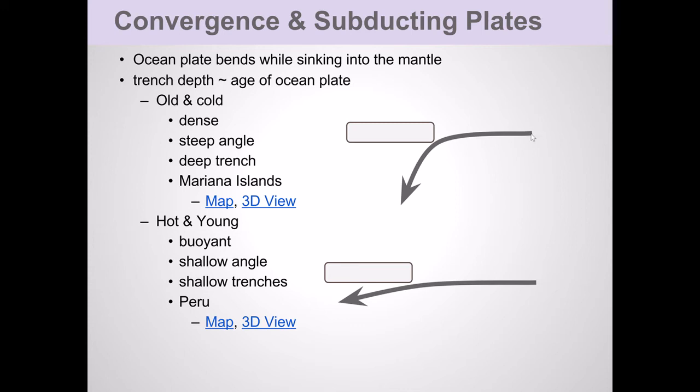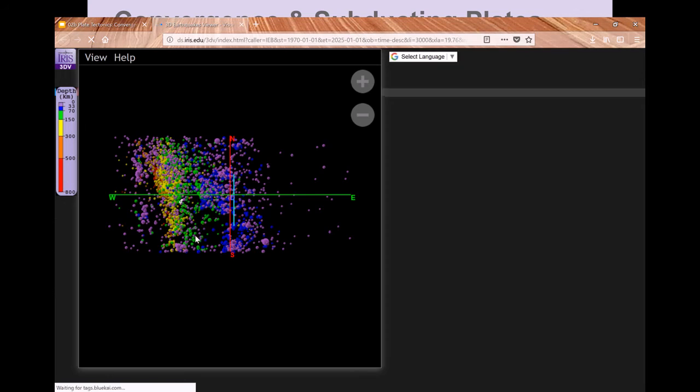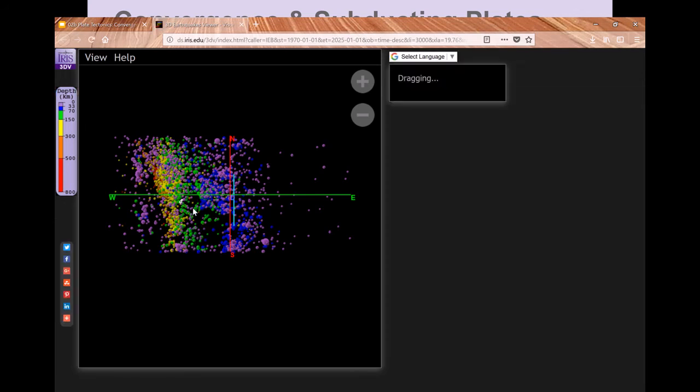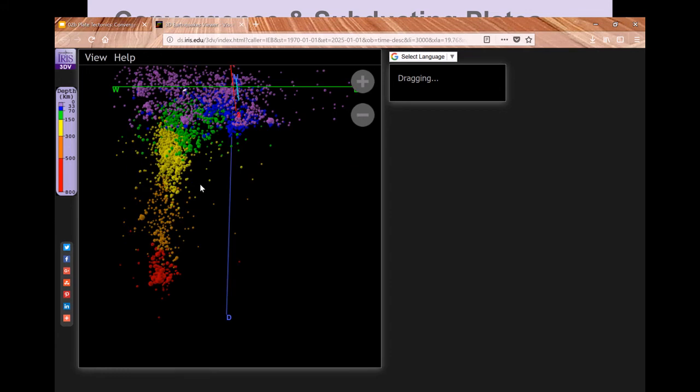An example of an old and cold subduction is the Mariana's Trench area. And I have a 3D view of the earthquakes from that subduction zone provided by the IRIS website. So you go from a map view and if you look off to the side, you can see the profile of those earthquakes dipping quickly into the earth. And those earthquakes represent the trace of that subducting oceanic plate.